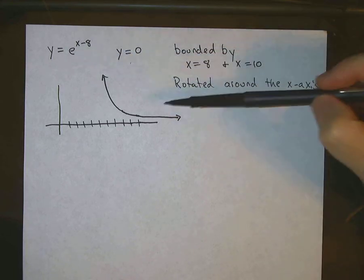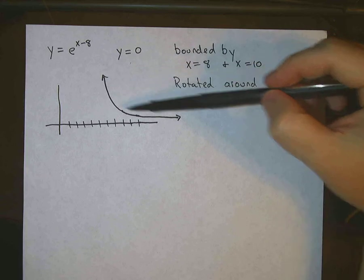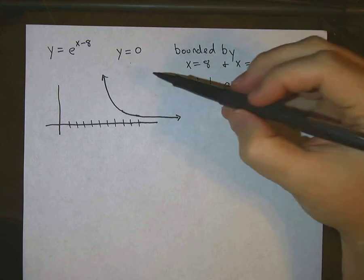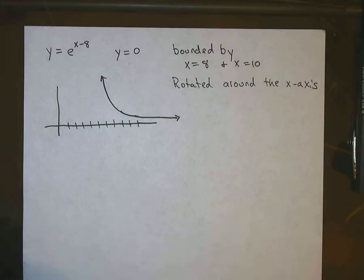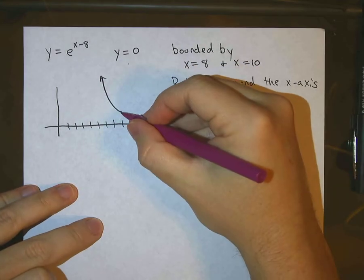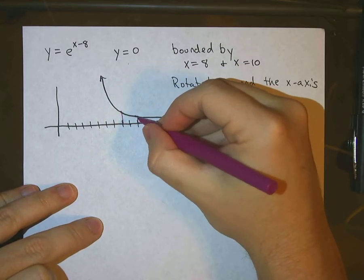So I've graphed the function here, which is e to the x minus 8, this graph, and it's bounded between x equals 8 and x equals 10. So we're looking at this region right here.